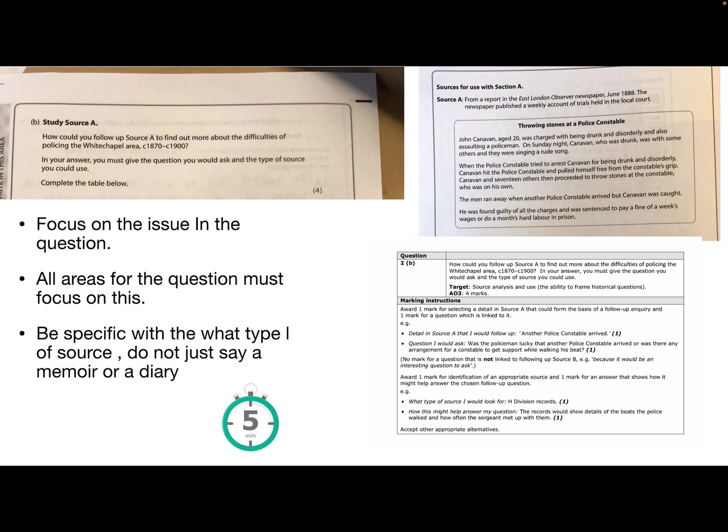So again these are just examples and so focus on the issue in the question. All the areas for the question must focus on this and be specific. What type of source, don't just say it's a memoir or a diary. That is not specific enough. So the detail in the source of mark scheme says they'd follow up is another police constable arrived. The question they would then ask was was the policeman lucky that another police constable arrived or was there an arrangement for a constable to get support when walking his beat? So you can see how it's focused in about the difficulties of policing and the lack of policing and it says no mark for a question that's not linked to following up source B, e.g. because it's an interesting question to ask.